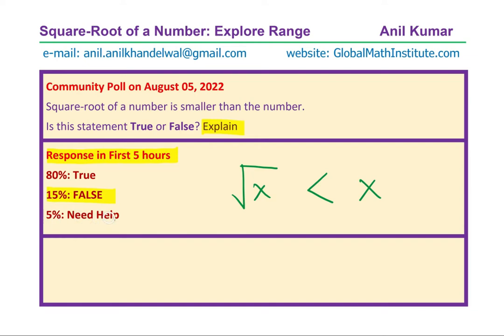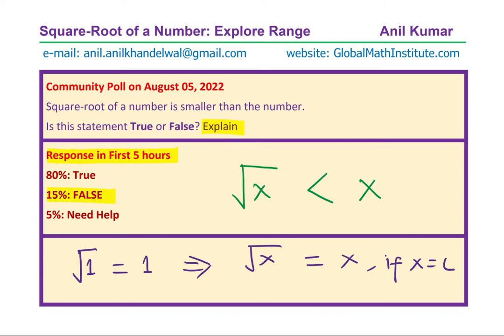15% say that it is false. We also need to explain the results. 5% need help. As far as the explanation is concerned, one explanation was that square root of 1 is 1 — that tells you that square root of x when x equals 1 is actually equal to x, and that means the statement is false. So that is the best answer we got on this particular poll: 15% who say that this statement is false is correct.